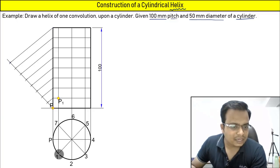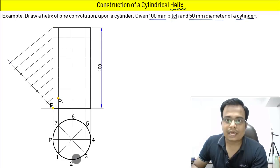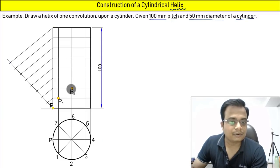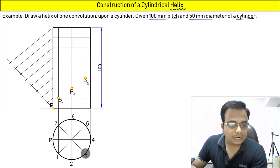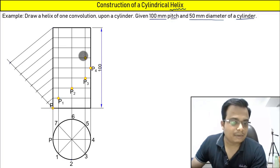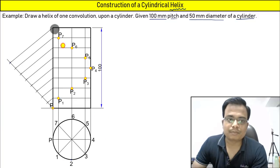Now in the top view we are at point one, and in the front view we are at P1. The point has moved further from one to two, so another one-eighth of the pitch will be covered — that is point P2. Moving further to three, in the front view it will be P3. From three to four, in the front view it is going to be P4. In the same way, we can work out the remaining points: P5, P6, P7, and finally P8.